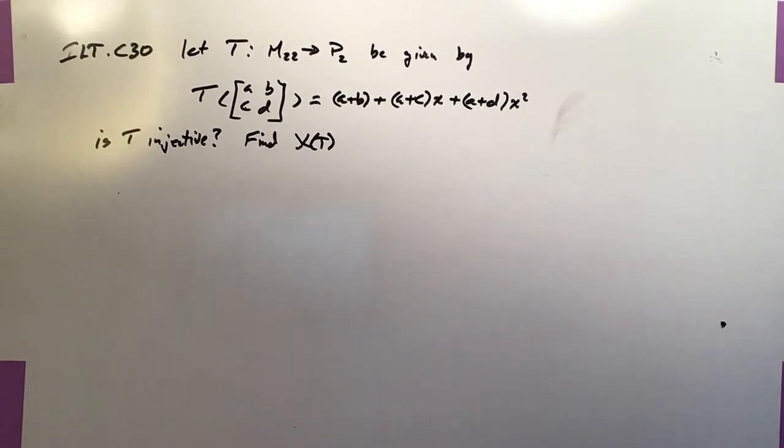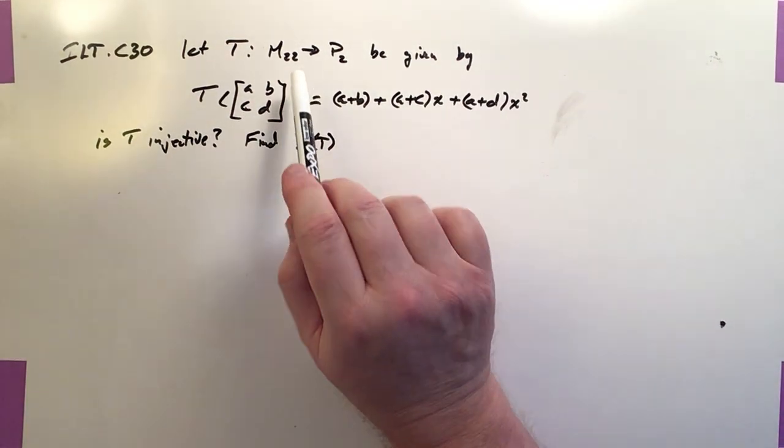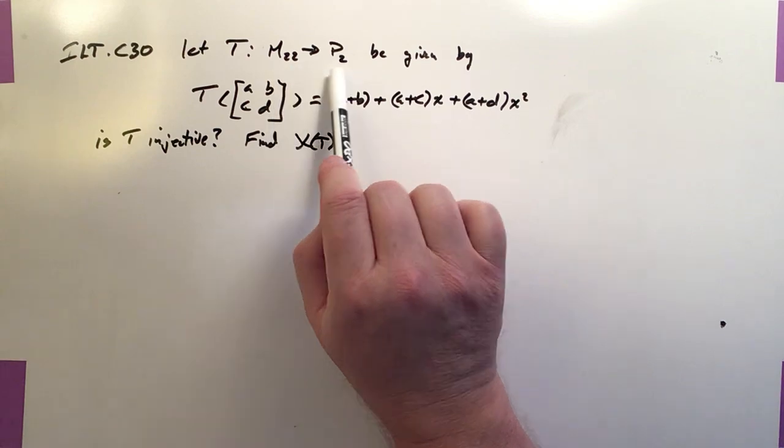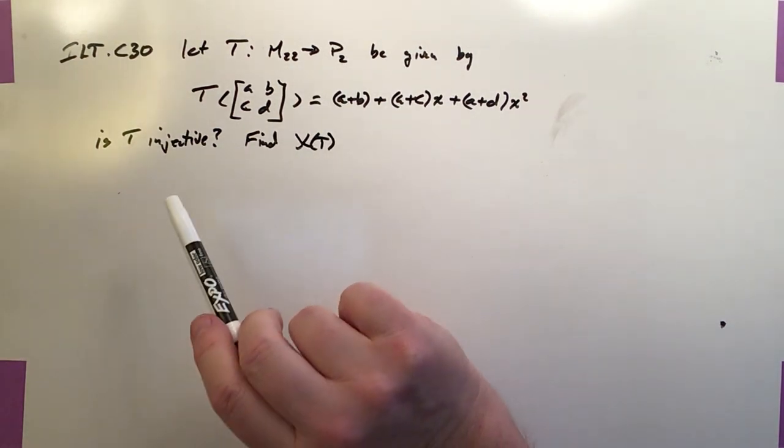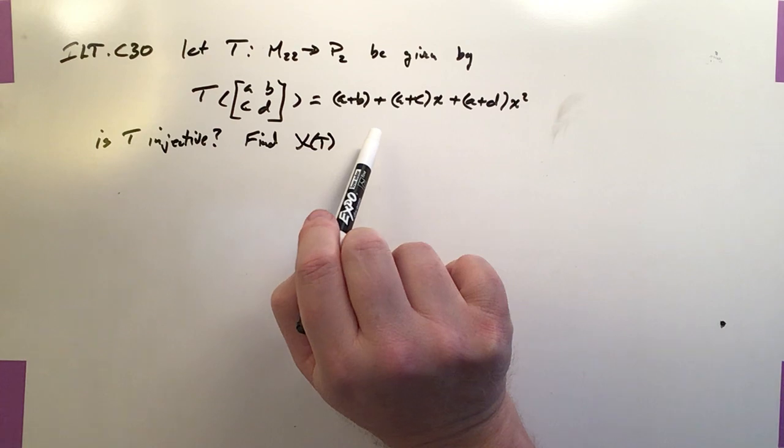Okay, this is ILT C30. Again, we're still on the whole idea of injective, but now we've got a different kind of transformation. This one maps a 2x2 matrix to a P3 polynomial, and here's the definition of it.